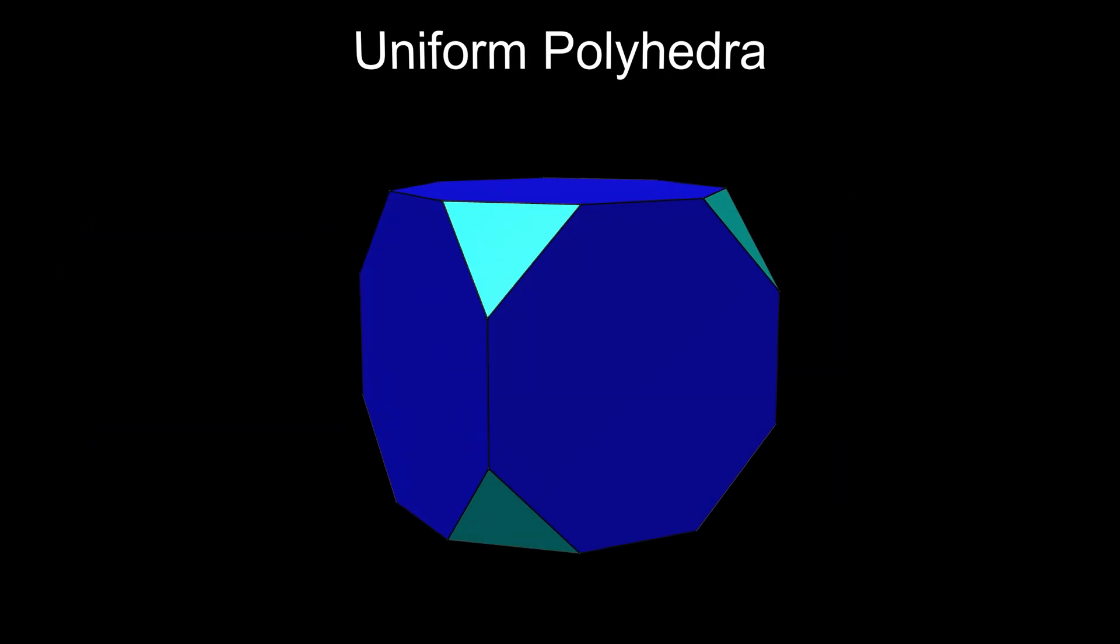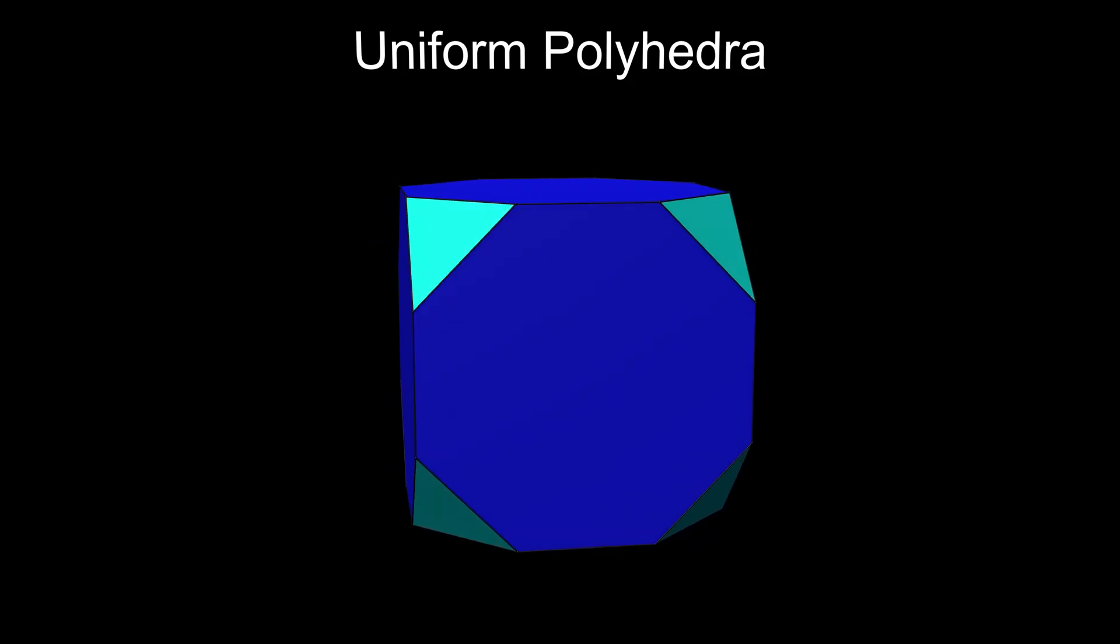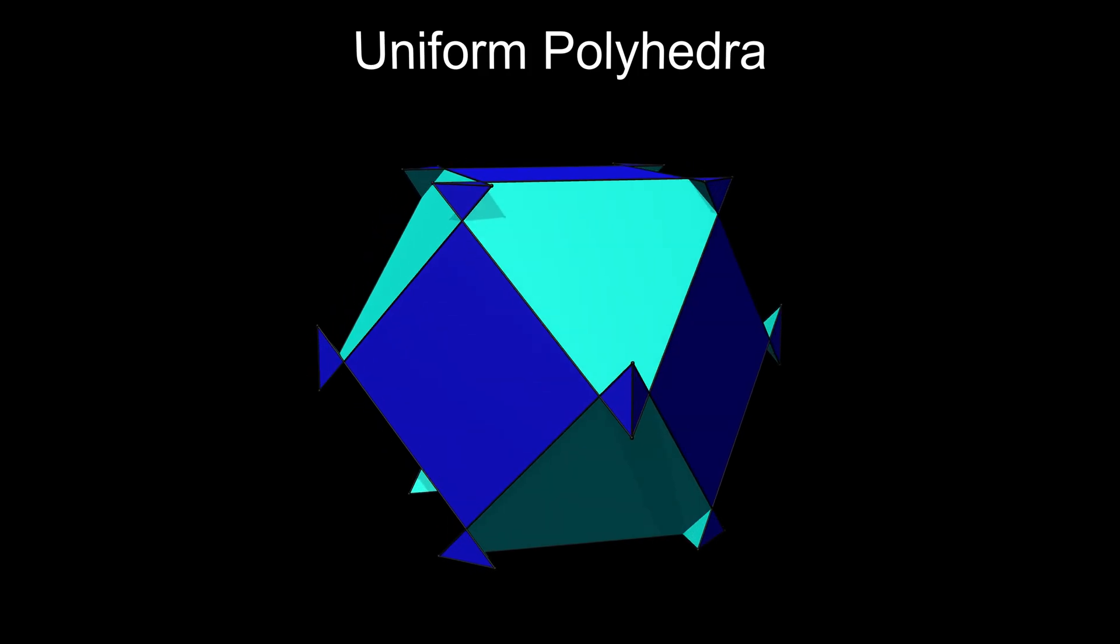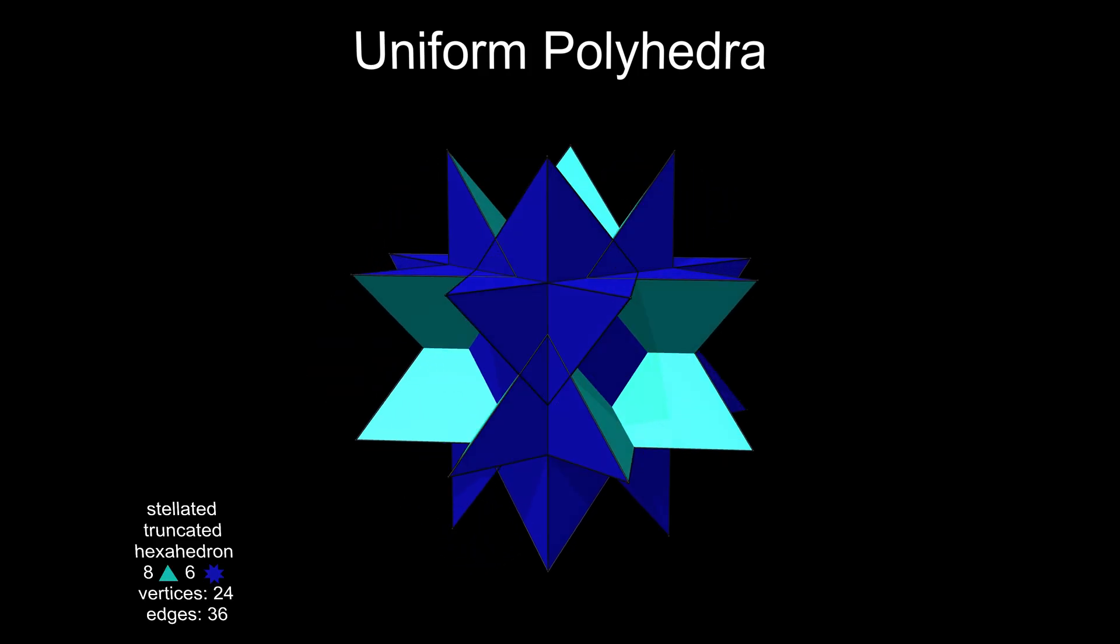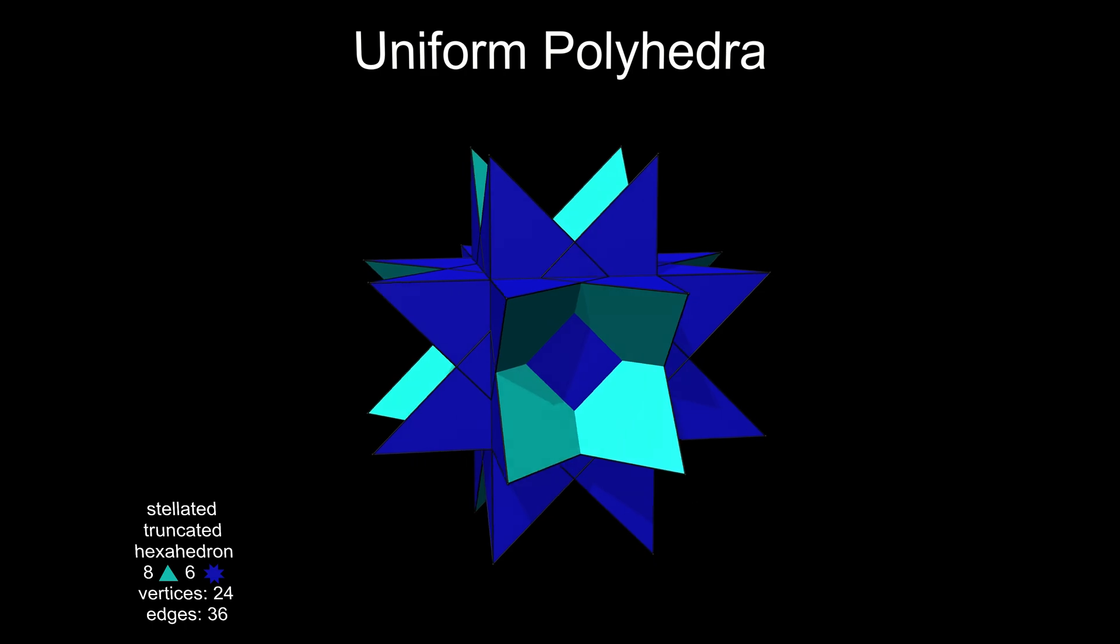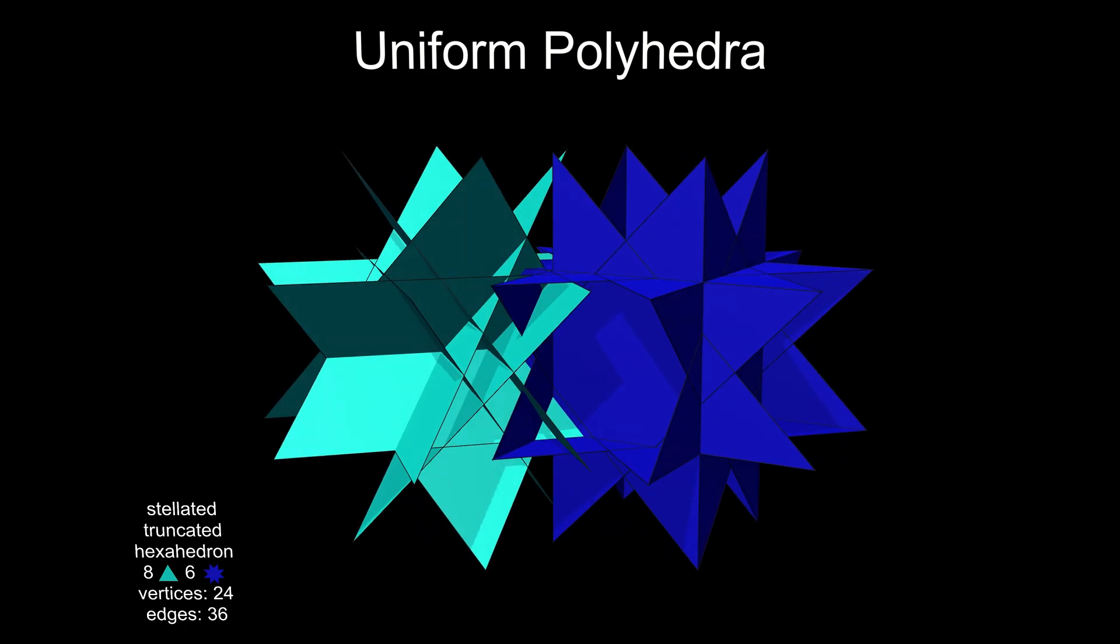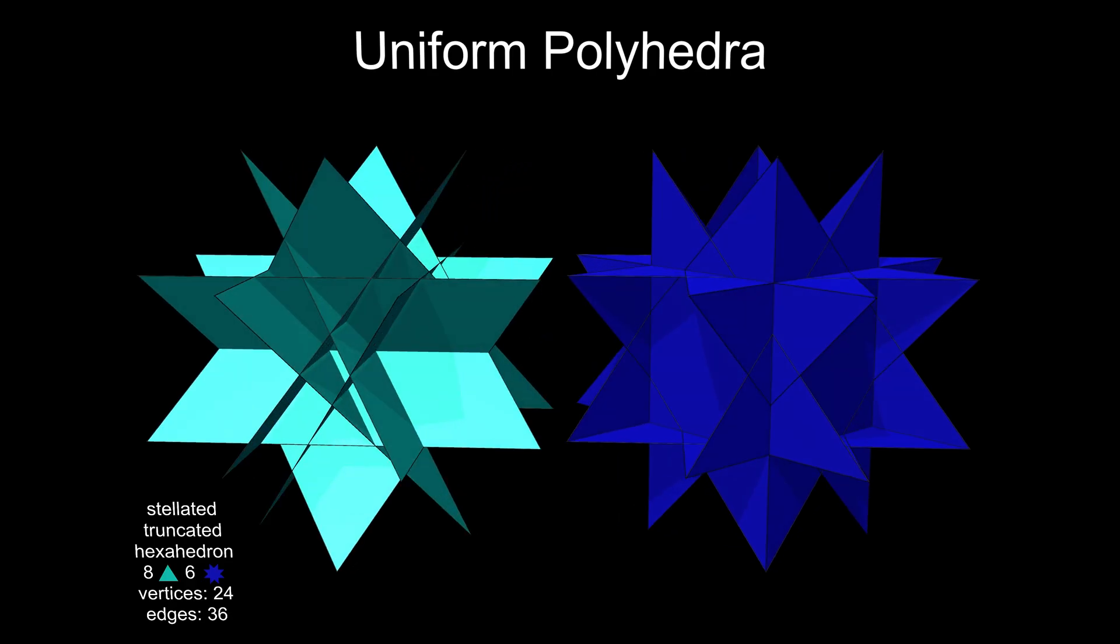We can do a similar trick with the truncated cube. Pushing the triangles through the centre makes a stellated truncated hexahedron. Again, appearance notwithstanding, the two are structurally very similar. The faces all pass close to the centre, giving it a density of seven.